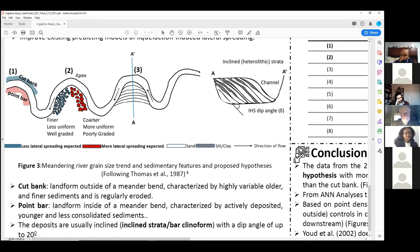Within the point bar itself, we also have downstream fining as the velocity of flow is decreasing, and we also have a more well-graded distribution on the downstream end. Based on this, we state that our second hypothesis is that we expect more lateral spreading on the upstream side of the point bar than on the downstream side because of the downstream fining and possible interlocking of soil grains, which can reduce the likelihood to liquefy in this case.